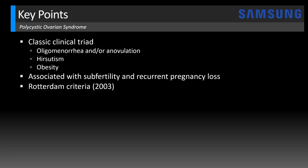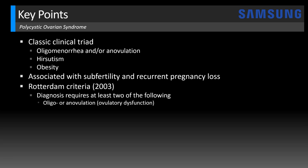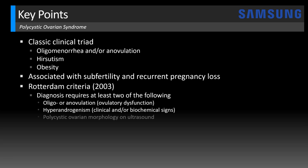The Rotterdam criteria proposed in 2003 requires that to make the diagnosis of PCOS, at least two of the following are required: oligo- or anovulation, meaning some form of ovulatory dysfunction; hyperandrogenism, which can be on a clinical or biochemical basis; and then polycystic ovarian morphology on ultrasound.